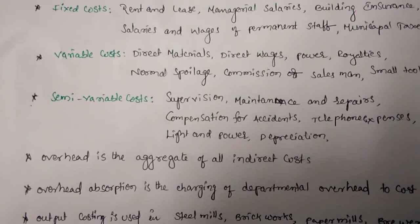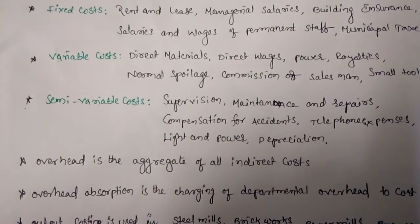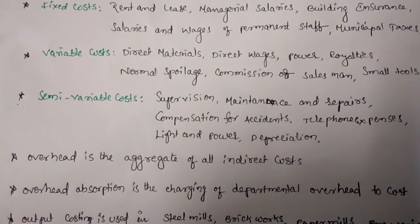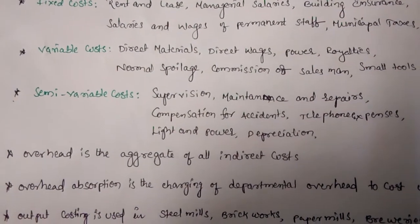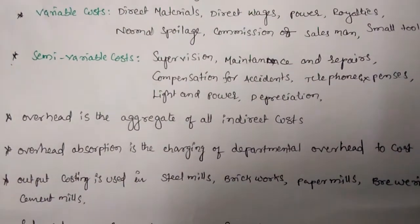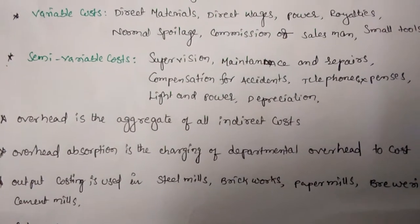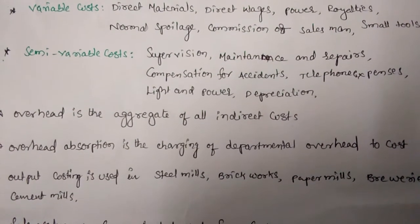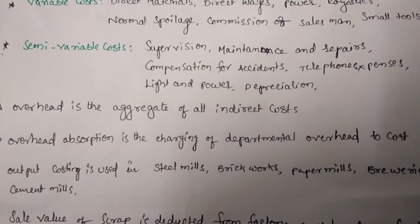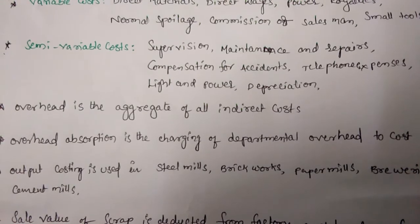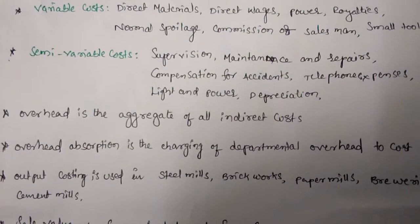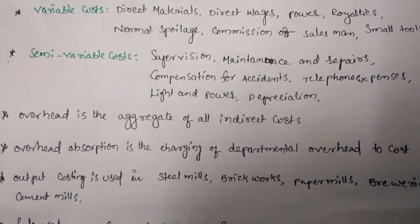Variable costs include: direct materials, direct wages, power, royalties, normal spoilage, commission of salesman, small tools, semi-wearable costs, supervision, maintenance and repairs, compensation for accidents, telephone expenses, light and power, and depreciation.